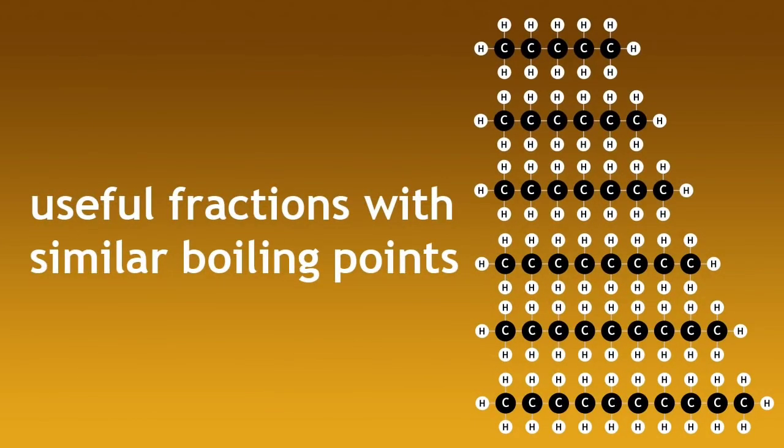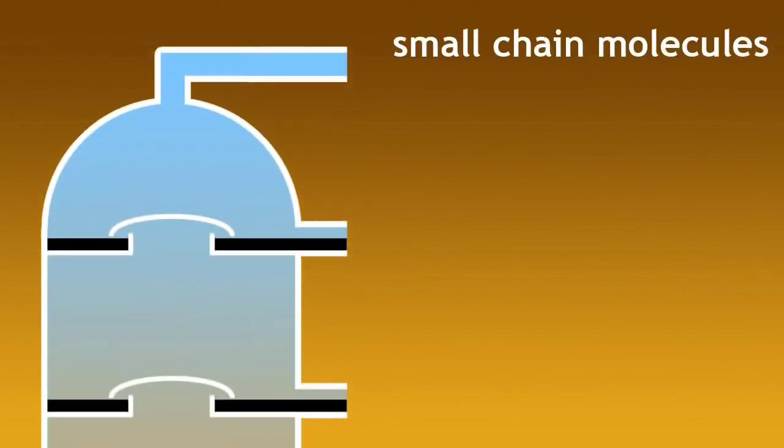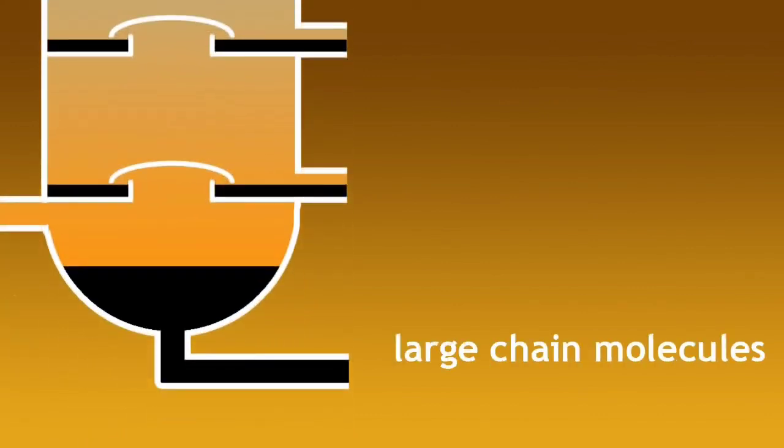You should understand that small chain molecules are collected at the top of the column since they have lower boiling points, and larger chain molecules are collected further down the column as these have higher boiling points.